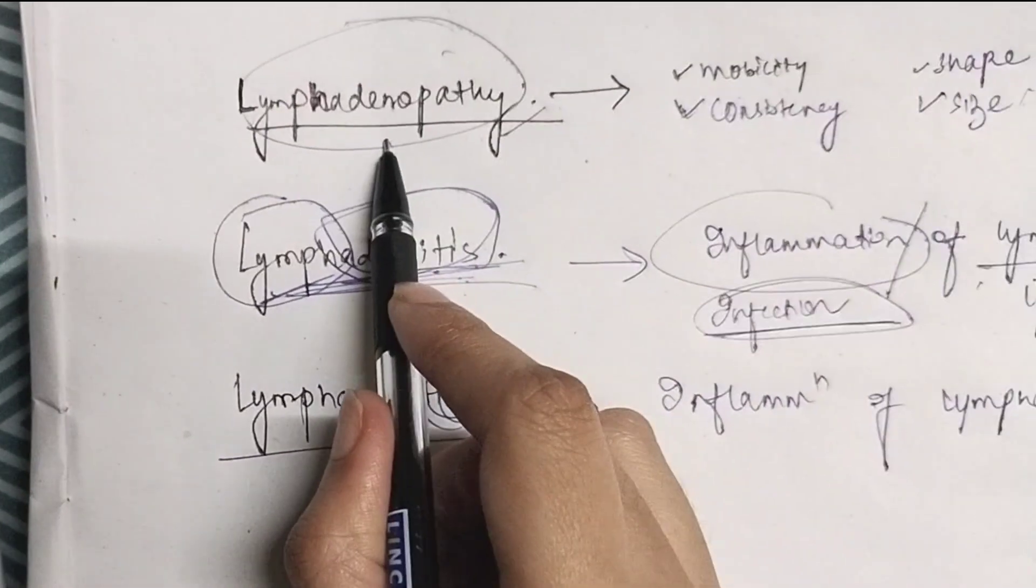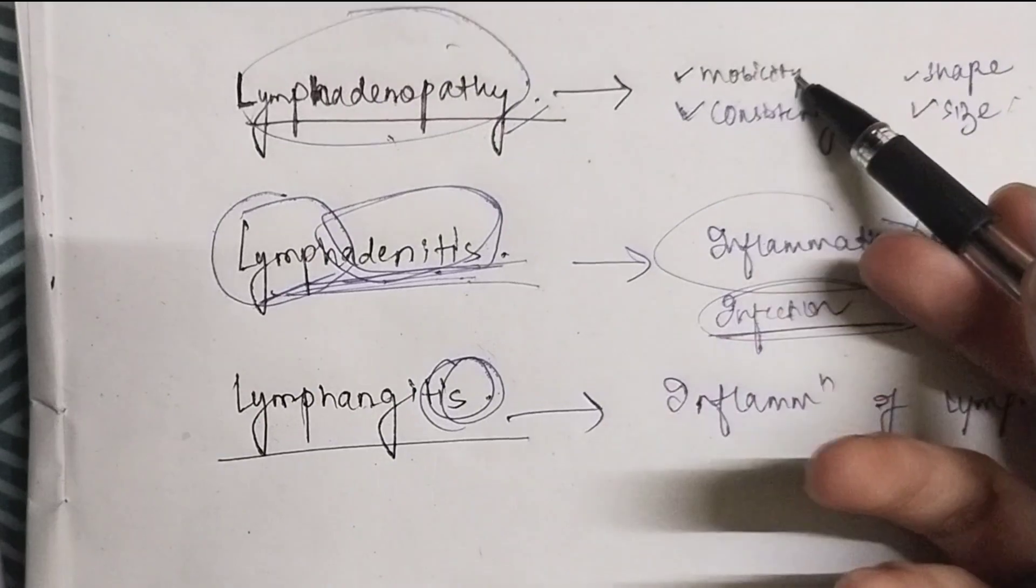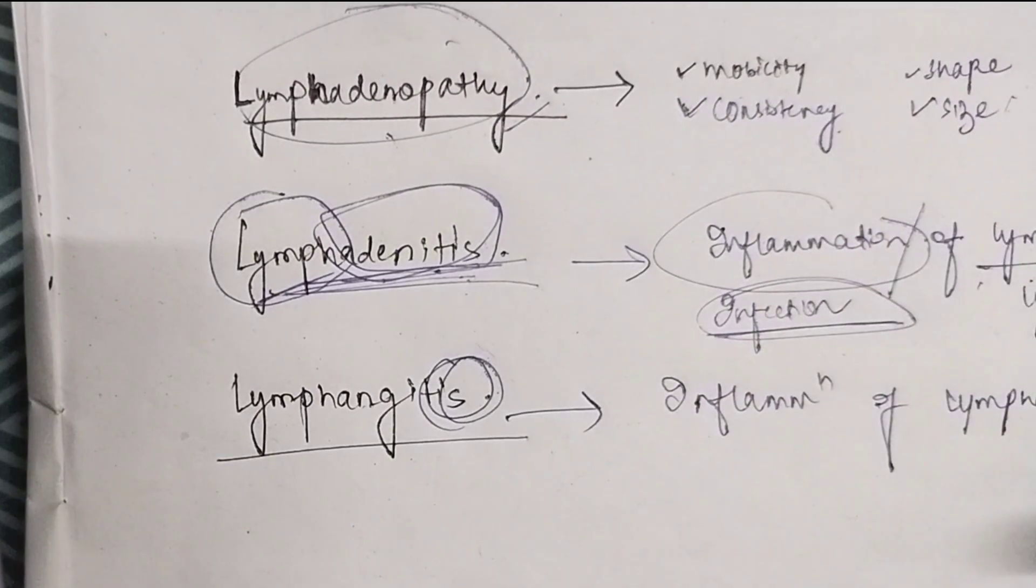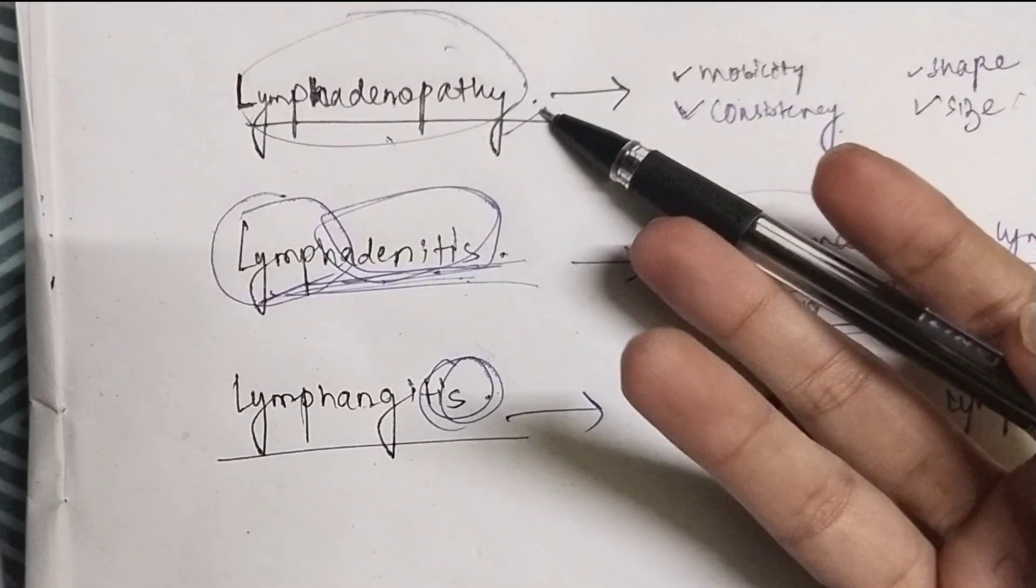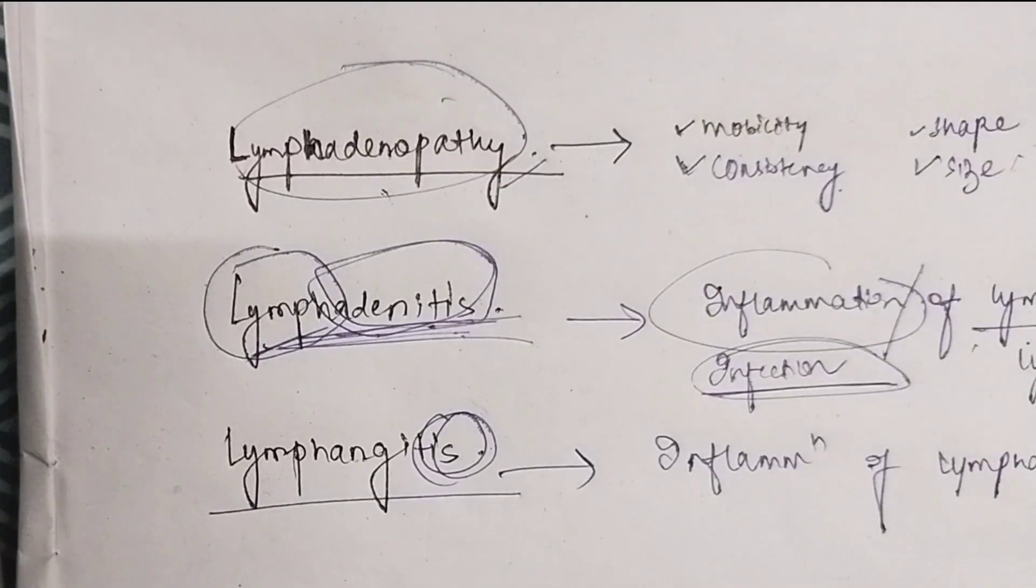Whereas lymphadenopathy, as I said, it means the change in the mobility, consistency, shape, size of the lymph node. That can also happen due to various reasons as we have already discussed. Localized and generalized, it can be infectious, it can be neoplastic, it can be autoimmune conditions as well.